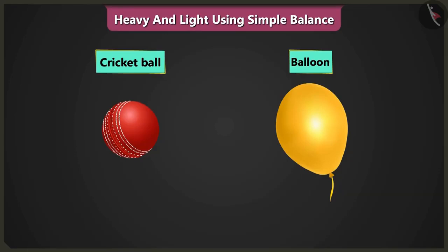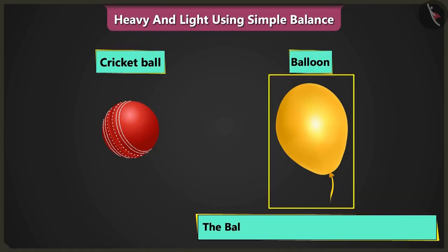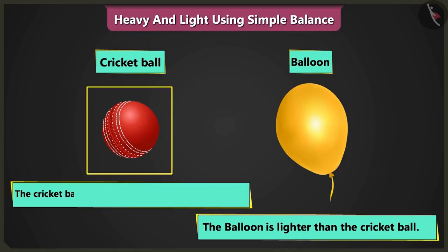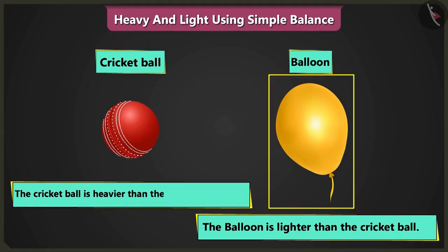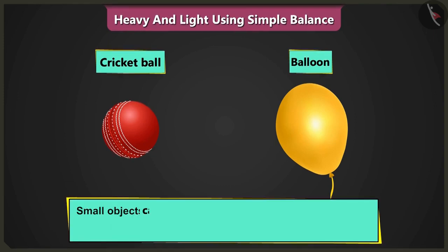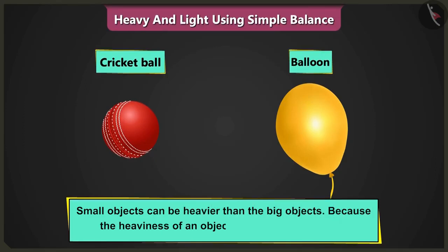Yes. But this balloon is lighter in weight than the cricket ball and the cricket ball is heavier in weight than the balloon. Rightly said, potato. Now do you understand? Even small objects can be heavier than big objects because the heaviness of an object depends on its weight.